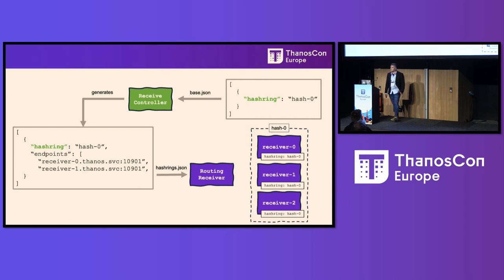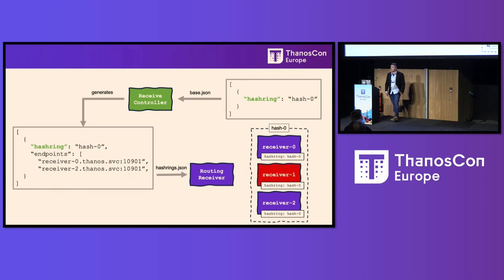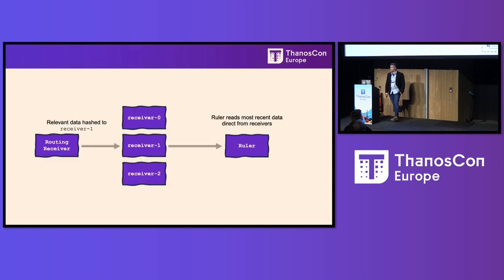When we scale, that will be updated by the operator. When something goes wrong, if we have dynamic hashing or dynamic control enabled in the receive controller, it will remove the component from the hash ring.